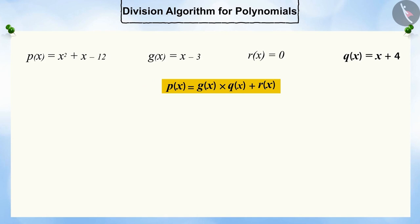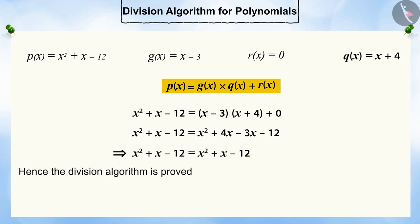Let's examine this conclusion with the help of our polynomials. By replacing all the polynomials in this division algorithm, both the sides become equal, which authenticates the validity of the division algorithm.